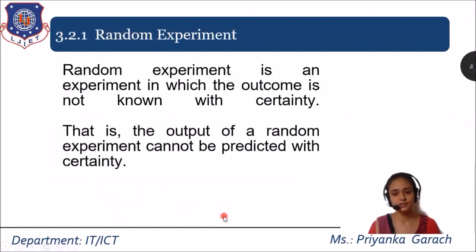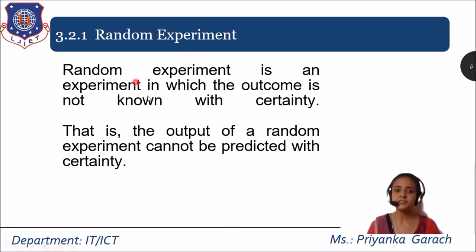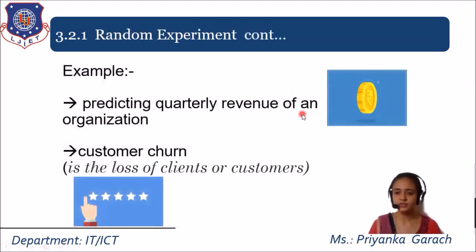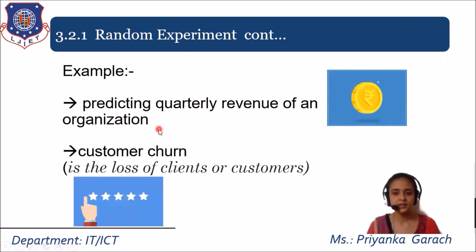Starting with the first one — the random experiment. A random experiment is one in which the outcome is not known with certainty. The definition is complex, so let's simplify it with an example. One example is predicting the quarterly revenue of an organization, whether in terms of rupees or dollars.